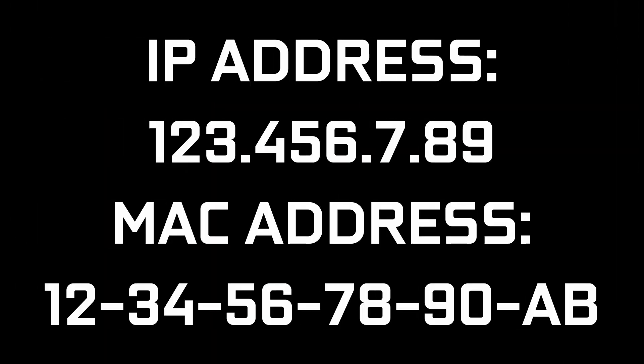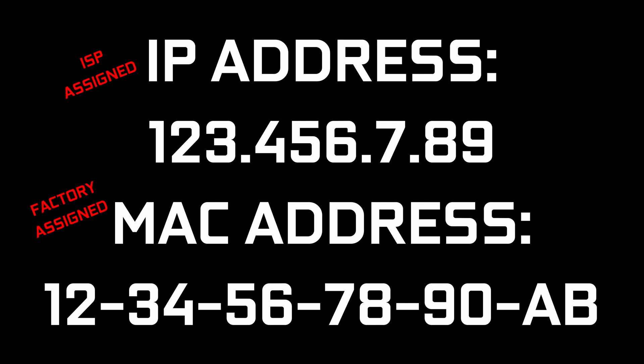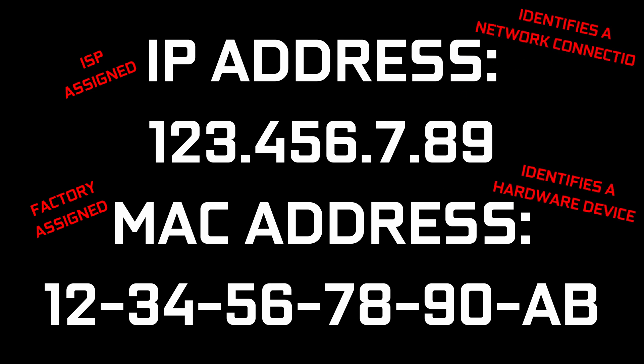So what's the difference between this and an IP address? Well, the MAC address is usually assigned by your device's manufacturer, while the IP address is assigned by your internet service provider. The MAC address is used to identify a specific device, while an IP address identifies a specific connection on a local network. Though they're both used to identify some endpoint on a network, be it a phone, a PC, or anything else really.